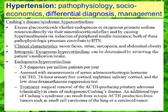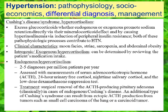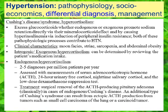Our next consideration in the differential diagnosis of chronic hypertension is Cushing disease and Cushing syndrome, also more generically known as hypercortisolism. Excess glucocorticoids, whether endogenous or exogenous, promote sodium retention directly via their weak mineralocorticoid effect, and also by causing hyperinsulinemia via induction of peripheral insulin resistance. Clinical characteristics include classic moon facies, striae, sarcopenia, and abdominal obesity.